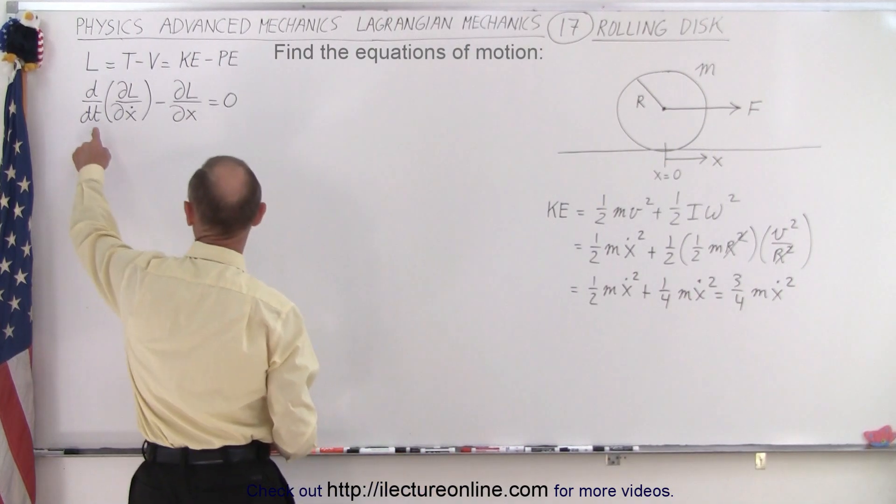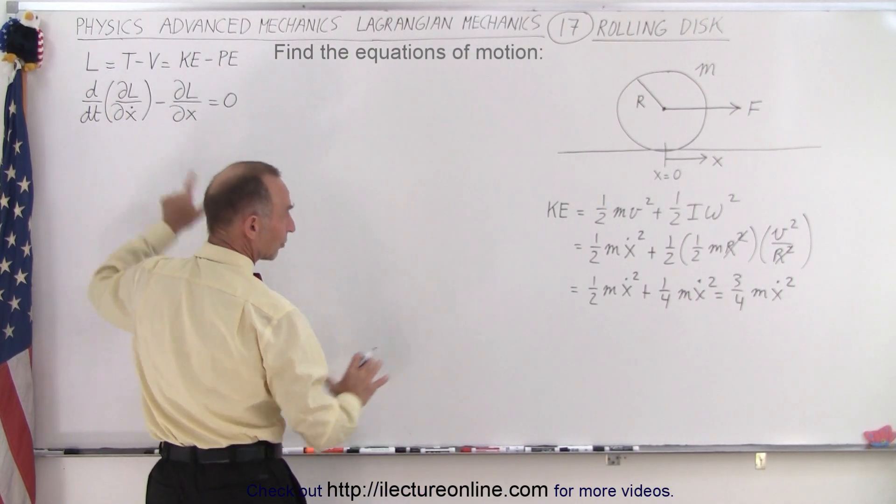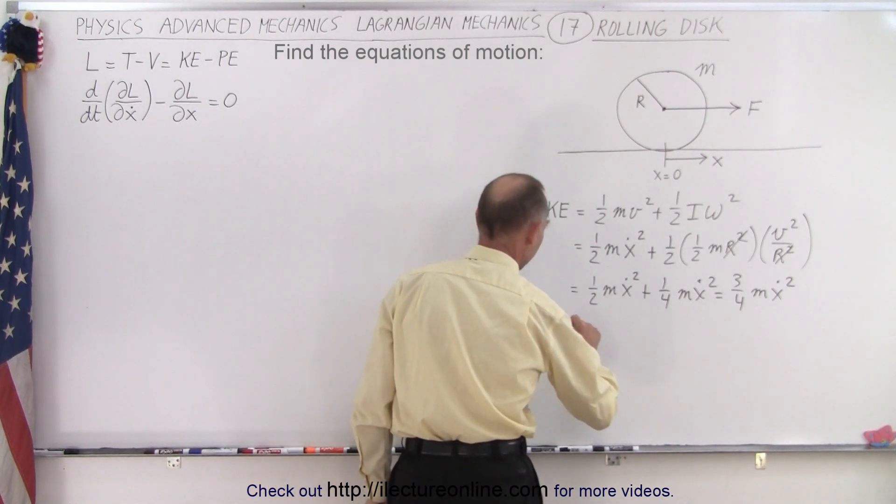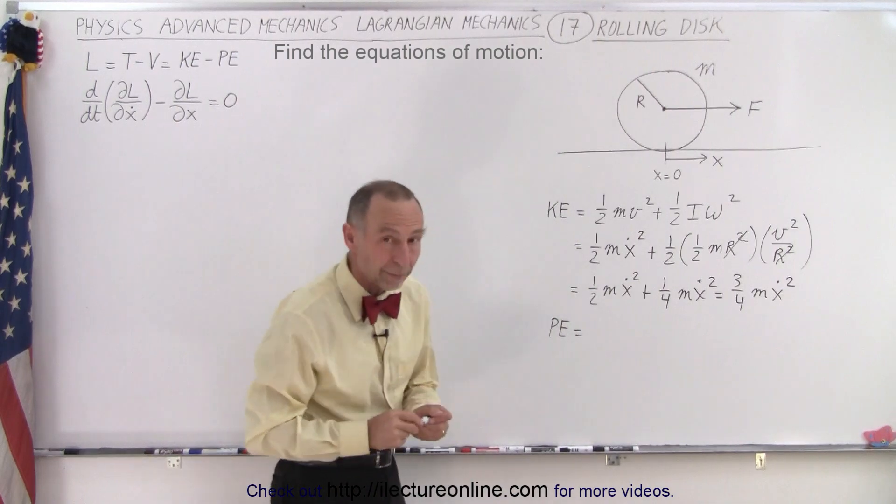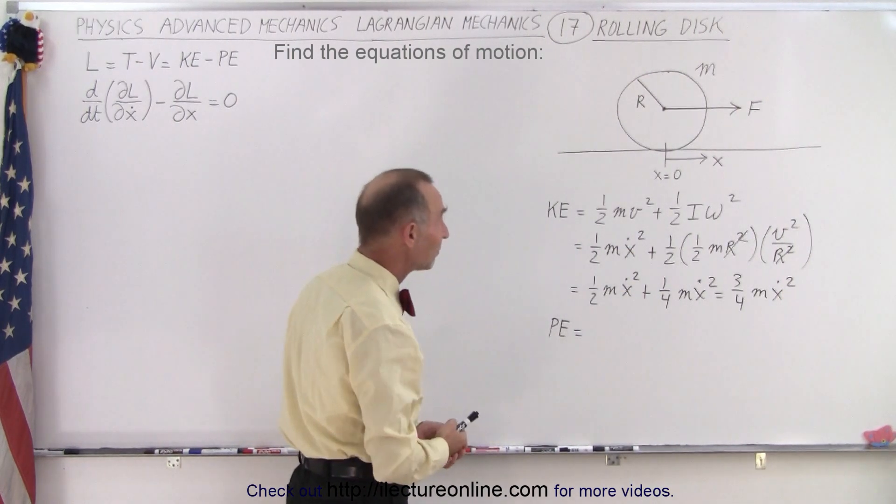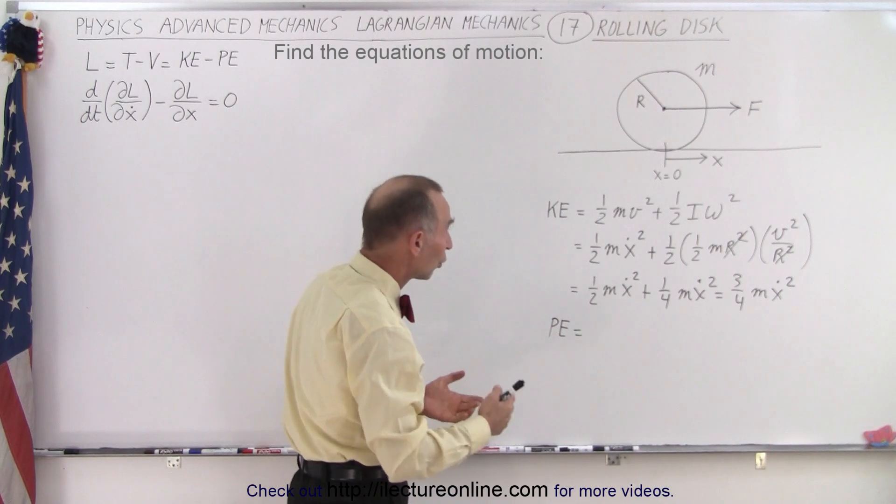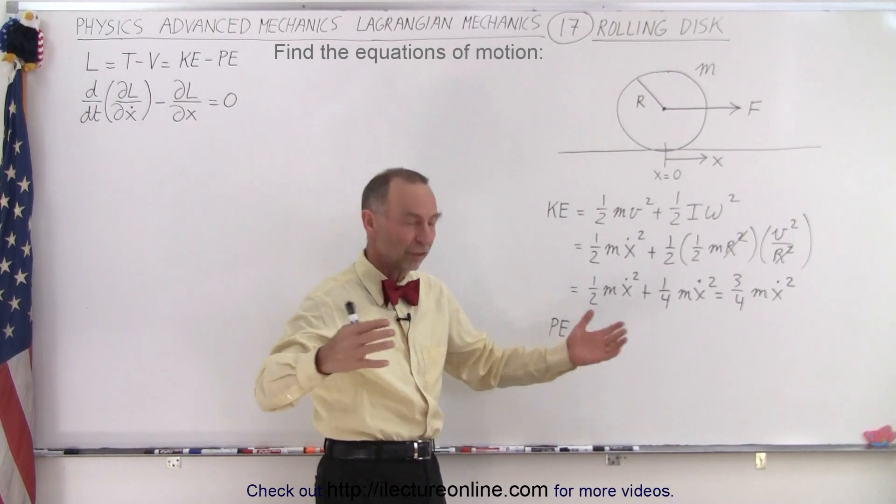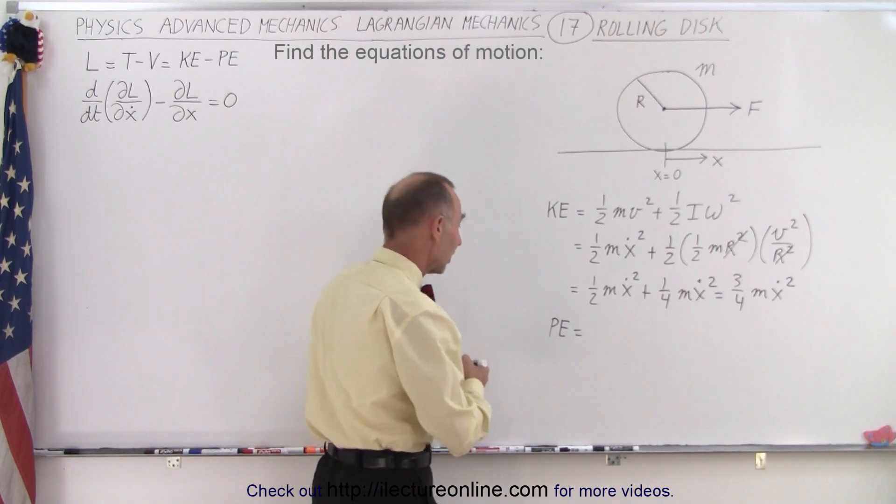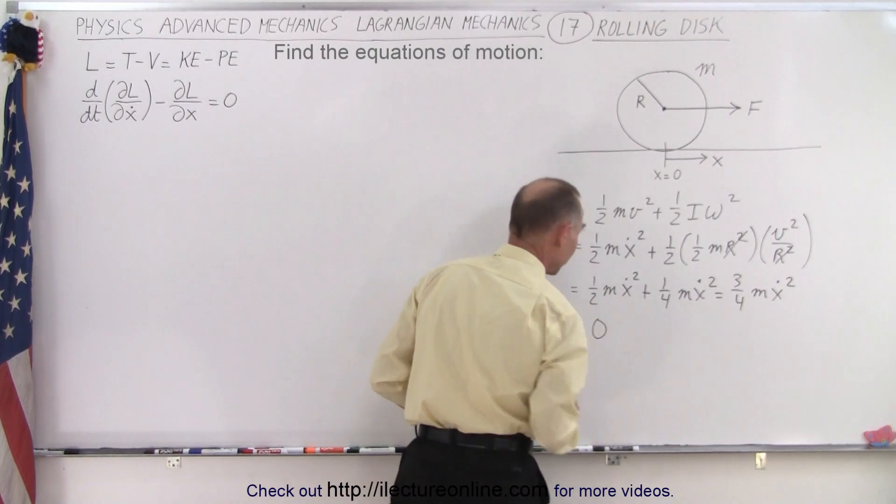Now we're not ready yet here, so we'll just leave it at that. The next thing we want to do is find the potential energy. The potential energy comes from gaining height, and since we're rolling on a flat surface, there's no height being gained. And it could also contain a spring that is contracted or elongated. We don't have one of those. So it turns out, in this case, the potential energy is simply equal to zero.